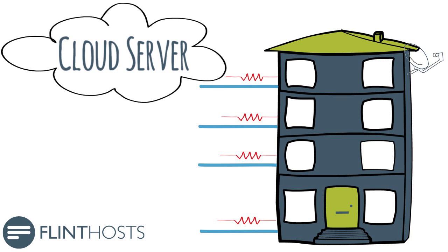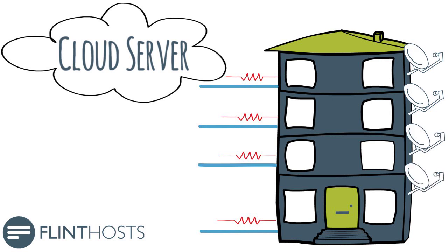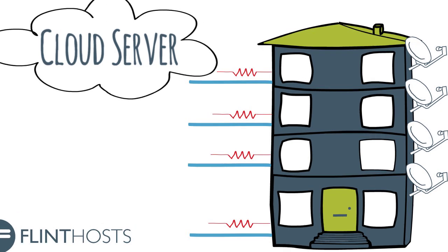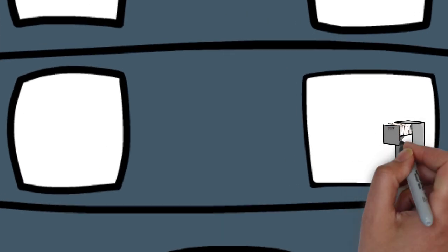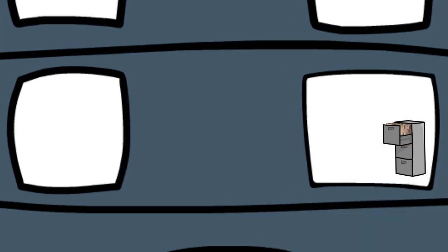Flint Hosts cloud servers work the same way. Rather than one small server servicing just one user, a massive server is split into many virtual servers. Each virtual server has its own resources, operating system and software. The resources aren't shared with any other virtual servers. This provides stability and resilience.